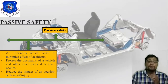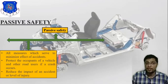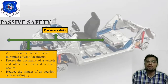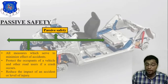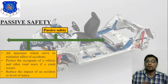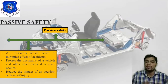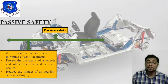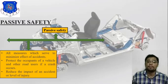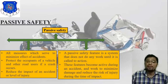Next is passive safety. What is passive safety? All measures which serve to minimize the effect of an accident — to protect the occupant of a vehicle and other road users if a crash occurs. The third point: reduce the impact of an accident or level of injury. That is what passive safety is.